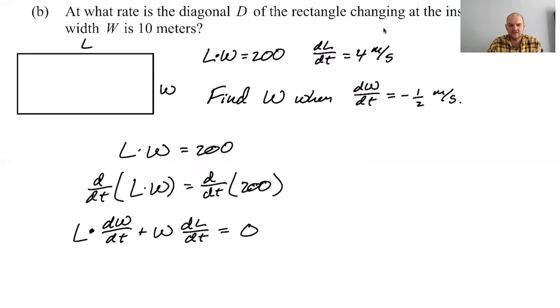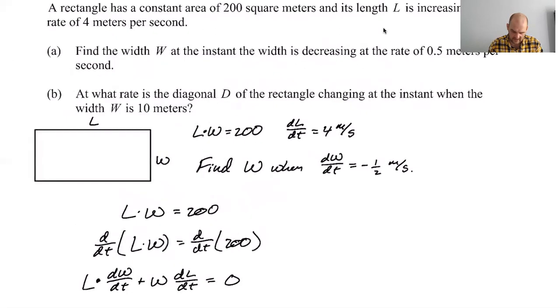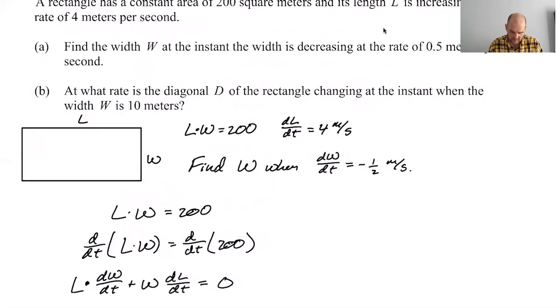All right. I know dL/dt is four. That's okay. I know, what is going on? Do I not need one other piece of information here? W. Oh, you know what I know? I know that L is 200 over W. So gross. All right. So this means that L is 200 over W.